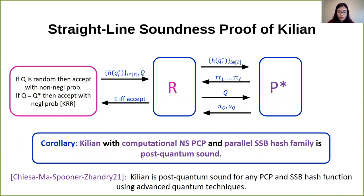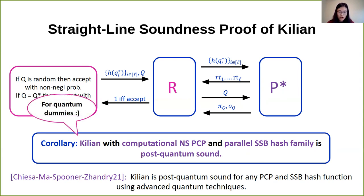We prove that any argument system proven sound via a straight-line reduction is also post-quantum sound, assuming the underlying assumption is quantum-hard. As a corollary, Kilian with a computational non-signaling PCP and a parallel SSB hash family is post-quantum sound. This was shown independently by Chiesa, Miles, Booner, and Dandry using advanced quantum techniques, but our corollary provides a simpler proof accessible to those without a strong quantum background.